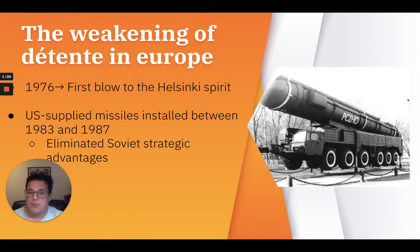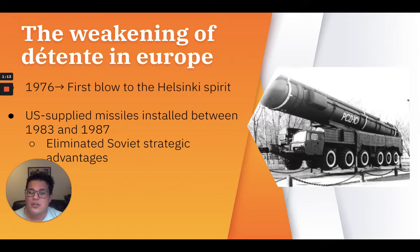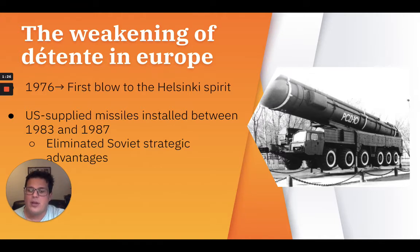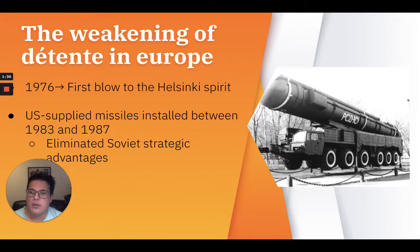The first blow to the Helsinki Spirit occurred when the Soviet Union placed SS-20 medium-range nuclear missiles in Central Europe in 1976. These weapons could reach targets between 600 and 5,000 kilometers away, threatening all NATO states in Europe. If no agreement was reached, the U.S. would deploy 552 Pershing and other nuclear-equipped missiles in Europe by 1983. Despite continued protest, the U.S.-supplied missiles were installed between 1983 and 1987 in the FRG, Britain, Belgium, the Netherlands, and Italy, eliminating any Soviet strategic advantage.